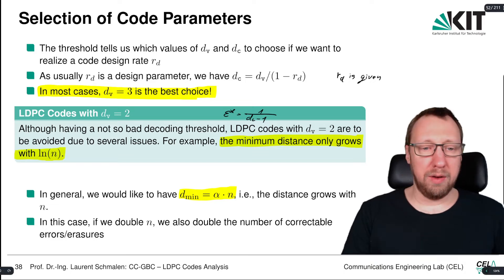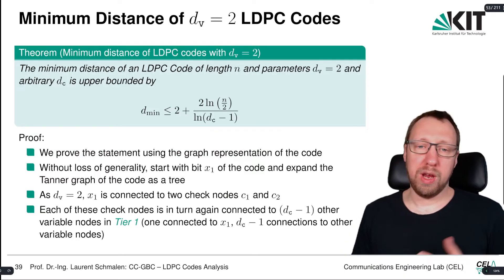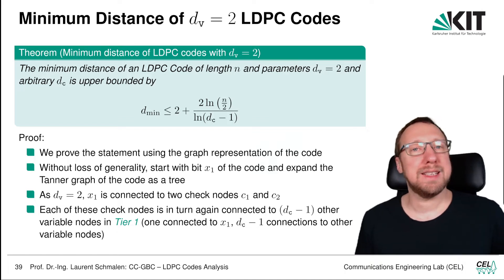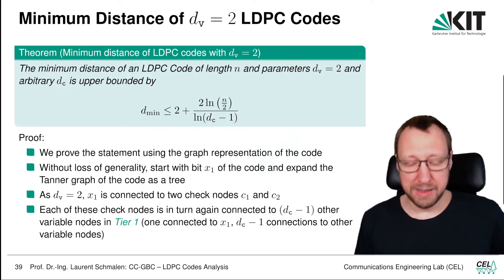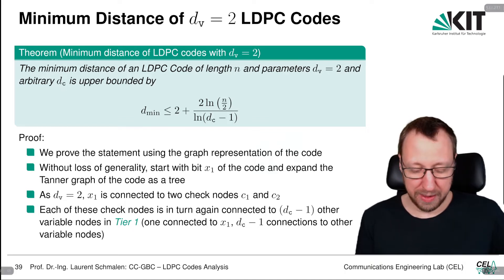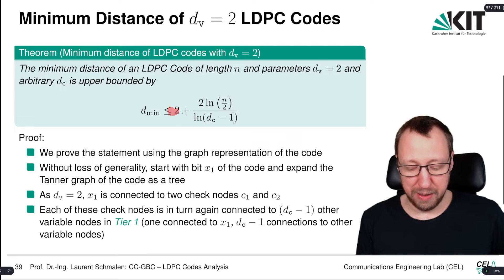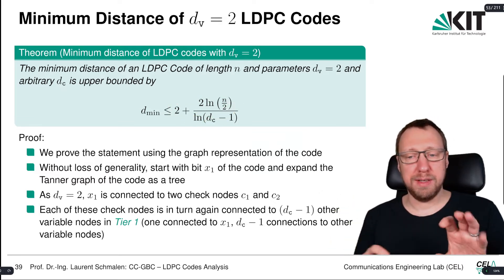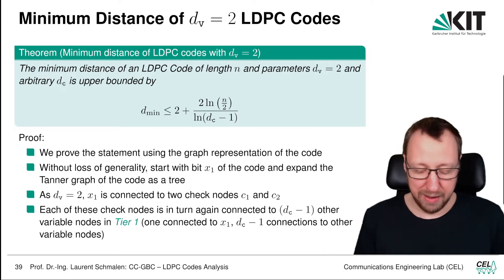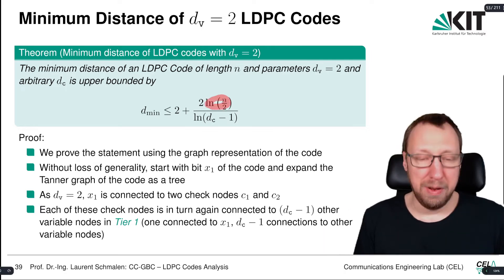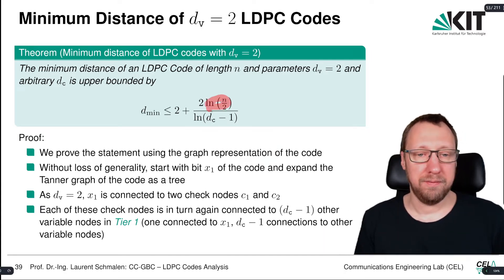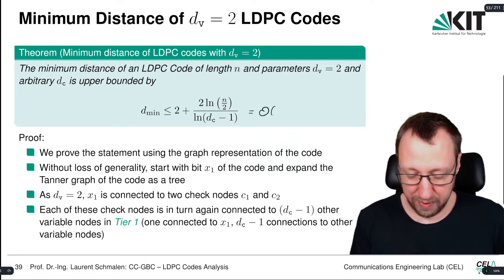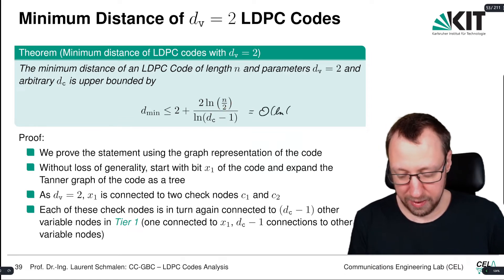So how can we prove this? We can formulate the following theorem and state an upper bound on the minimum distance. This upper bound is given by an expression where, apart from some constants, the main dependence is on log n — so the upper bound on the minimum distance is in the order of log n.